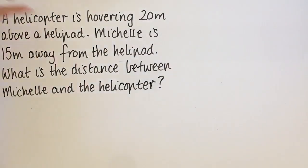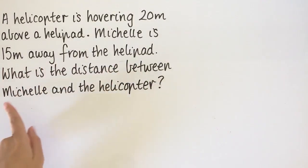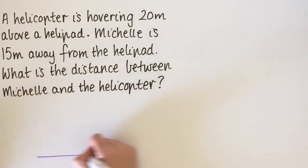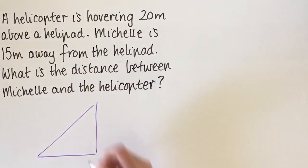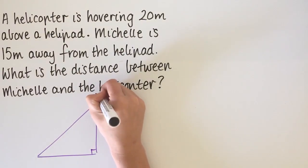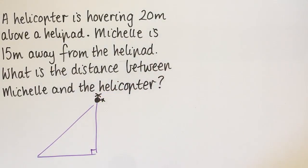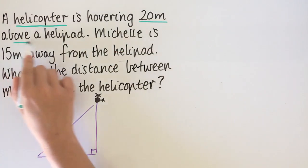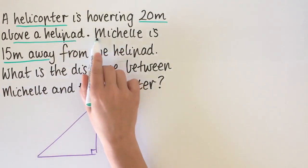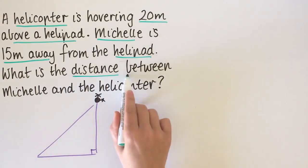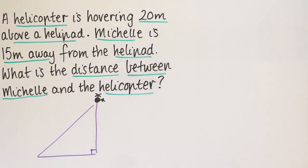For the second example: a helicopter is hovering 20 metres above a helipad. Michelle is 15 metres away from the helipad. What is the distance between Michelle and the helicopter? The key information is: helicopter is 20 metres above the helipad, Michelle is 15 metres from the helipad, and we want to find the straight-line distance between Michelle and the helicopter.